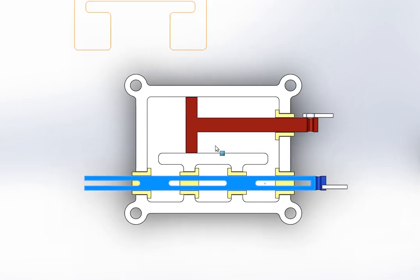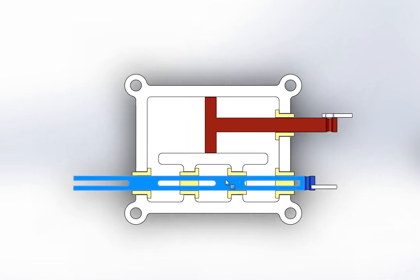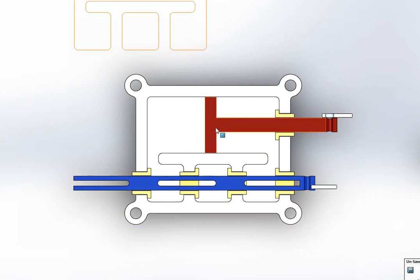Once it gets here again, the piston is going to get pushed back, and now you can see we are in the cycle where we started, where the valve is all the way to the left and the piston is in the middle.